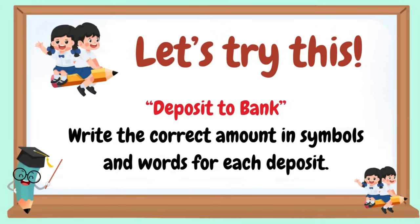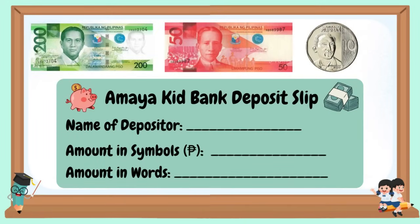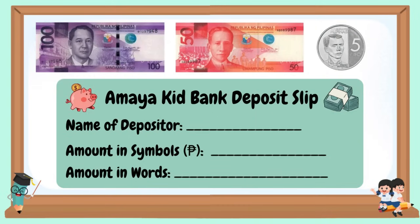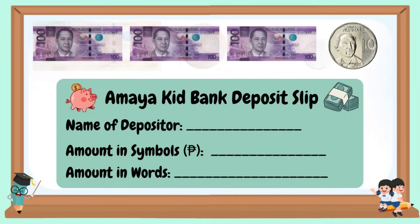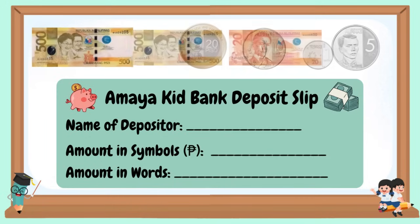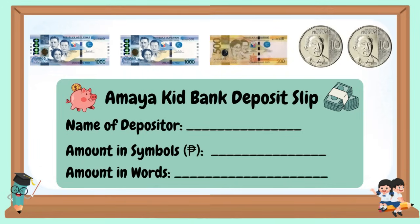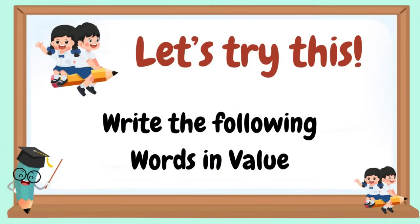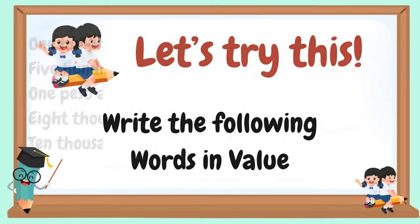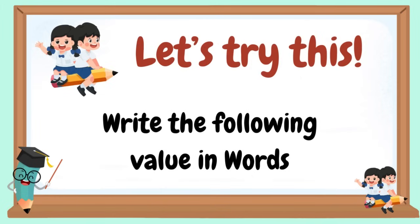Let's try this — Deposit to bank: Write the correct amount in symbols and words for each deposit. Let's try this: Write the following words in value. Let's try this: Write the following value in words.